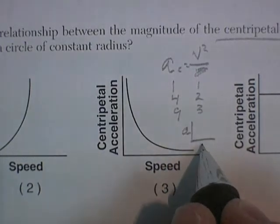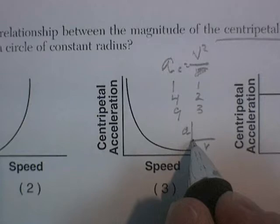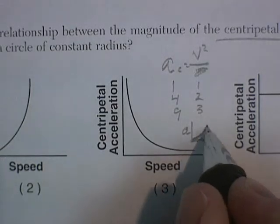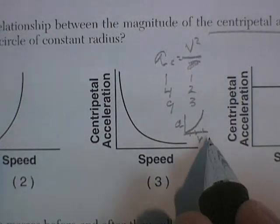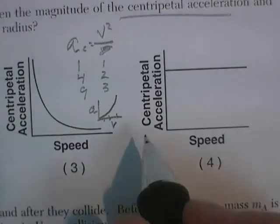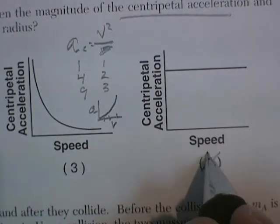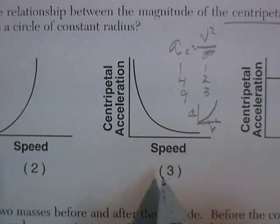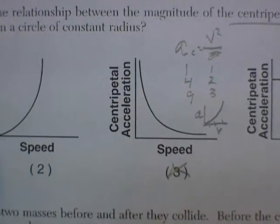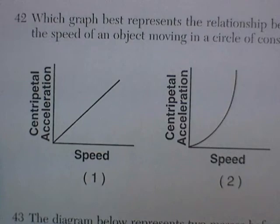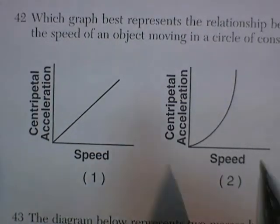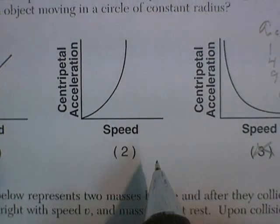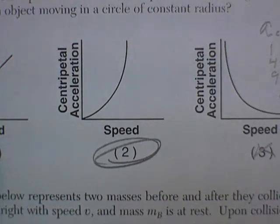Acceleration versus speed: as speed goes up, acceleration goes up a lot. So we're looking for that graph. That would show centripetal acceleration increasing steeply — not staying the same, and not decreasing with speed. There's the graph we're looking for, and there's the correct answer.